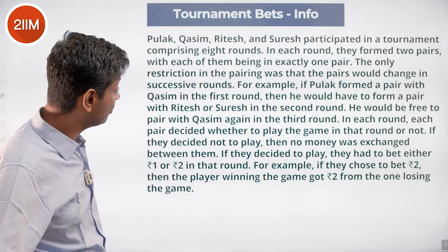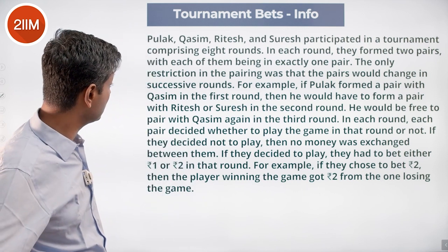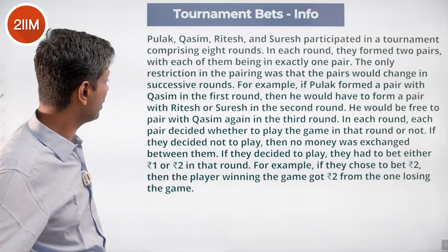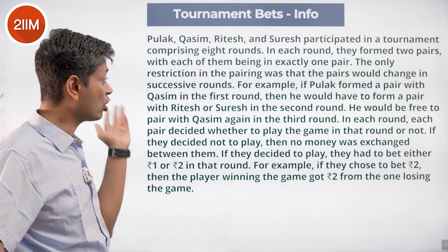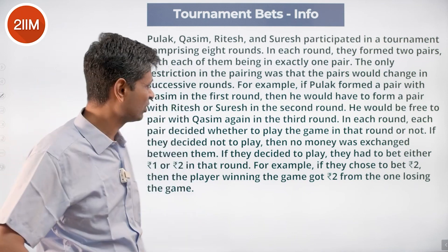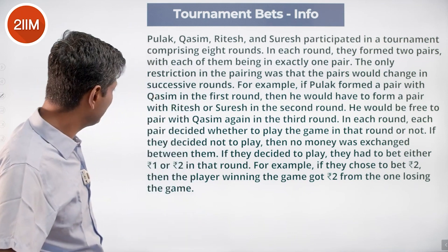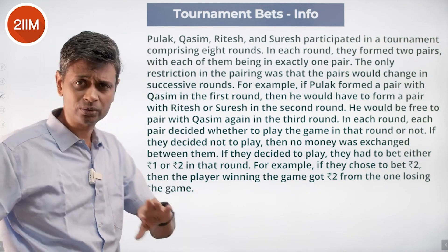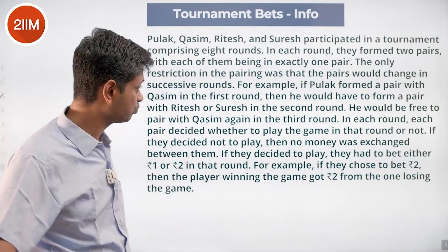For example, if Pulak formed a pair with Kasim in the first round, then he would have to form a pair with Ritesh or Suresh in the second round. He would be free to pair with Kasim again in the third round — that's fine.